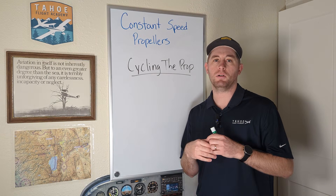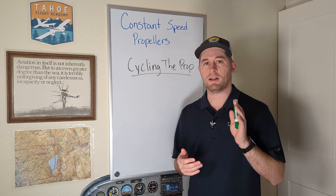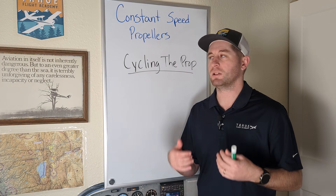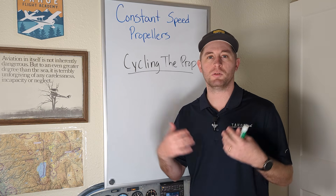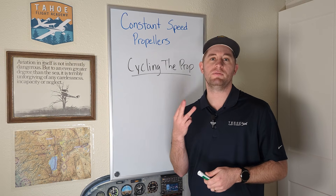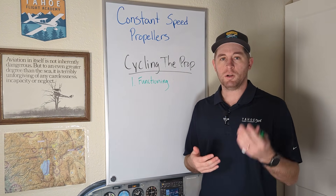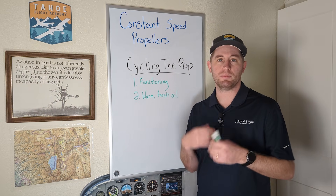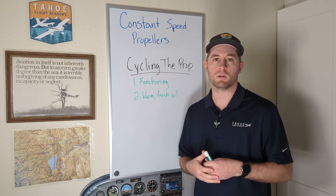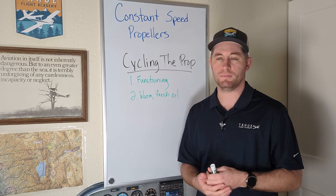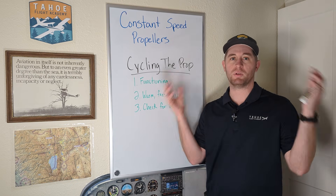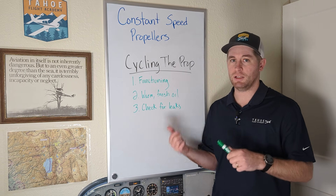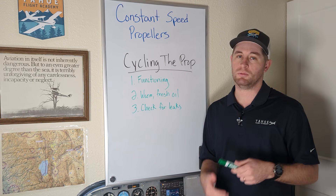So hopefully that explains how a constant speed prop works. Now let's talk about how you operate it. You have that blue prop knob in the cockpit, which directly controls the spring tension. During your run-up with a constant speed prop, you're going to have this additional step where you cycle the prop usually two or three times. This serves three functions. Number one: you want to make sure it's actually working — if the RPM isn't changing when you cycle the prop, something is really wrong. Number two: we want to get some nice warm, fresh oil inside the hub so it's ready to work, just like doing a warmup before you work out. And number three: we're checking for leaks. If you cycle the prop and oil sprays all over the windshield, there's a leak — and not only can this cause a propeller failure, that oil is coming from the engine, so losing it obviously isn't good.